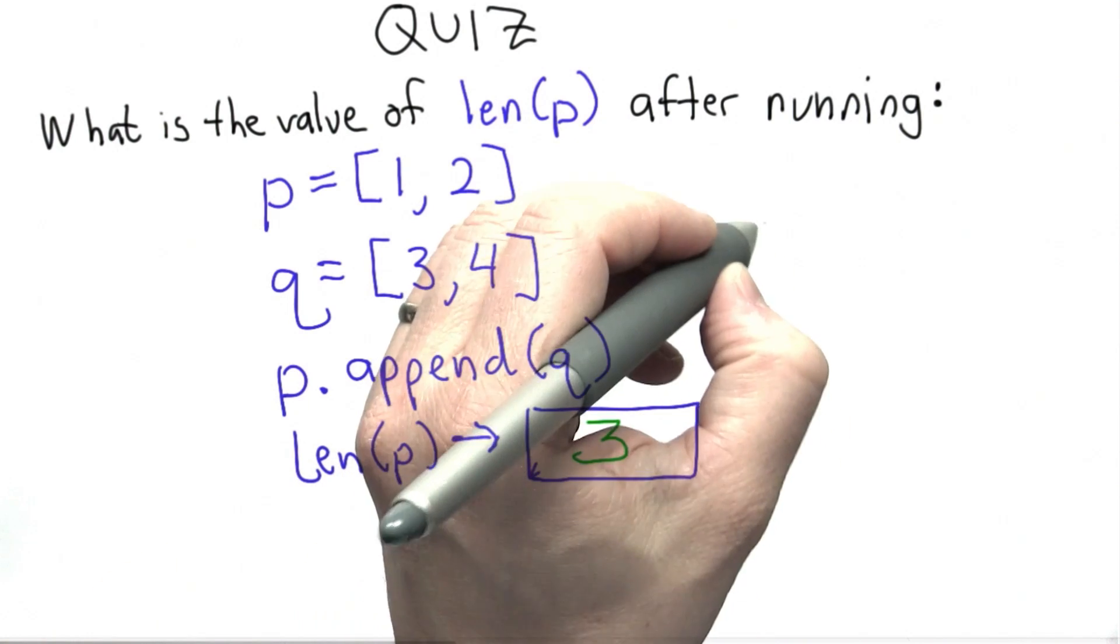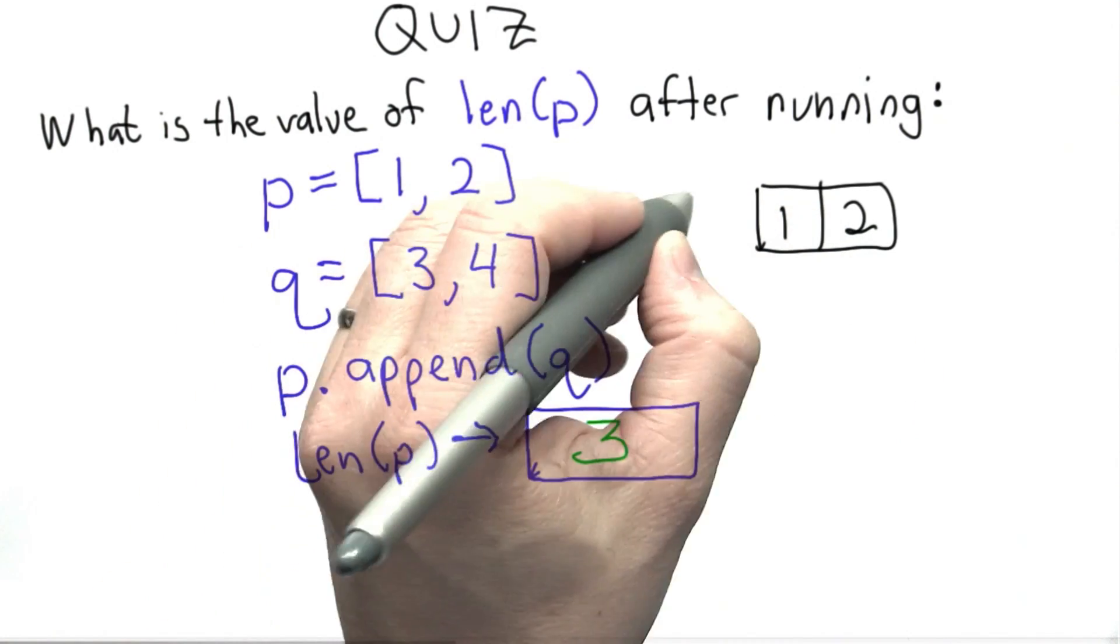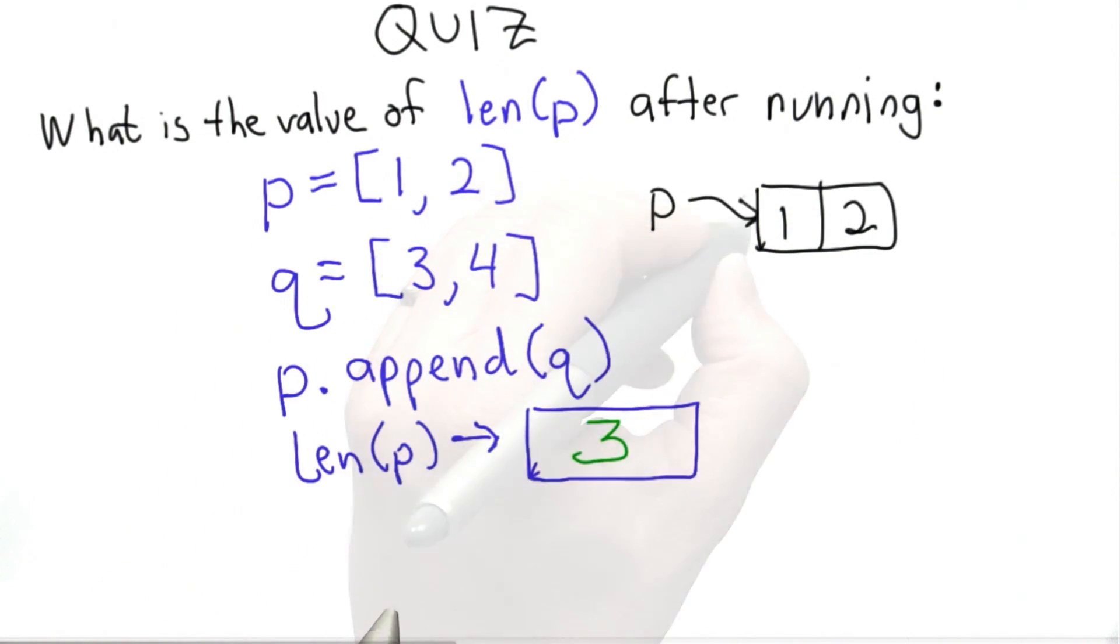The first statement creates the list with the elements 1, 2, and p refers to that list. The second statement creates the list with the elements 3, 4, and assigns that to the variable q.